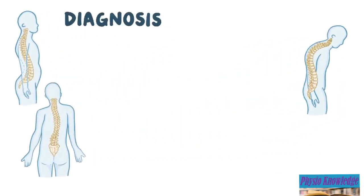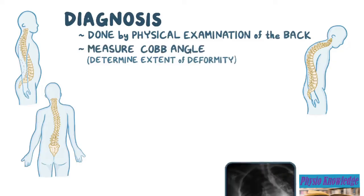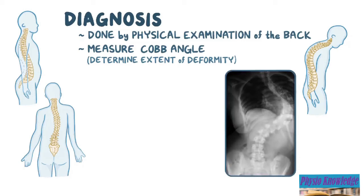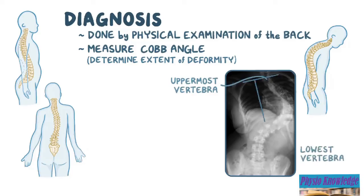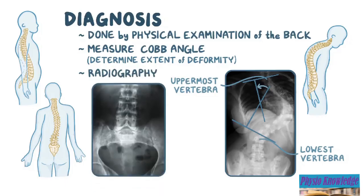The diagnoses for lordosis, kyphosis, and scoliosis are done by physical examination of the back. To figure out the extent of the spinal deformity, the Cobb angle can be measured. That's the measurement between two lines drawn perpendicular to the upper border of the uppermost vertebra and the lower border of the lowest vertebra involved in the curvature. In addition, radiographs of the back can be taken as well.